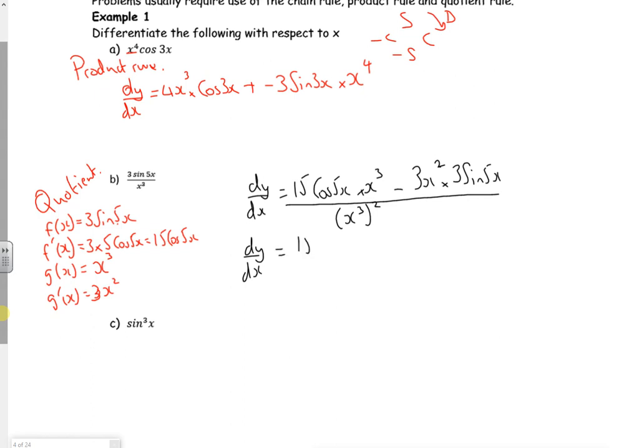So 15x - well actually, x squared will cancel, won't it? But I'll write it out first. So 15x cubed cos 5x minus 9x squared sine 5x all over x to the power of 6. So if you look, the x squared will cancel there. And nothing else will. So I'll get 15x cos 5x minus 9 sine 5x over x to the 4. Please remember that the 5x is attached to the sine and the cos, so it can't just randomly cancel.